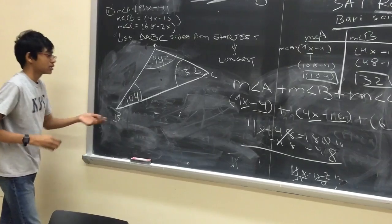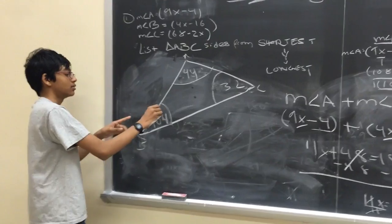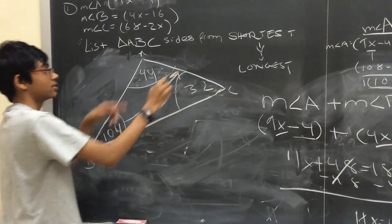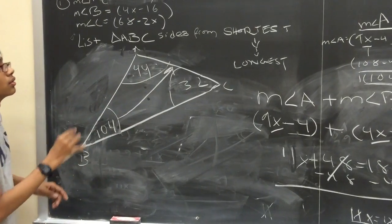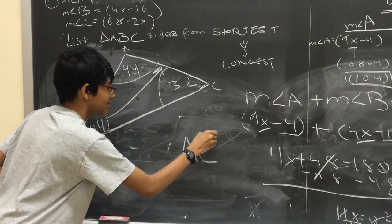So to find the largest side, we find the side opposite to the largest angle, which turns out to be side AC. So side AC is the longest side.